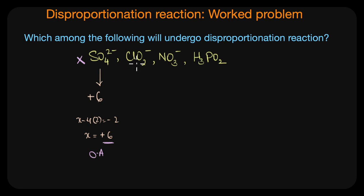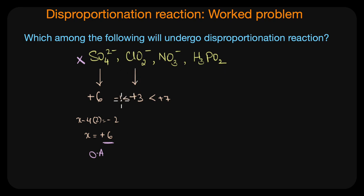Let's now look at the second species, ClO2⁻. The oxidation state of chlorine in ClO2⁻ is plus three. The highest oxidation state chlorine can achieve is plus seven, and the lowest is minus one, since chlorine is a halogen. So chlorine in ClO2⁻ has an intermediate oxidation state, which means it can undergo a disproportionation reaction.